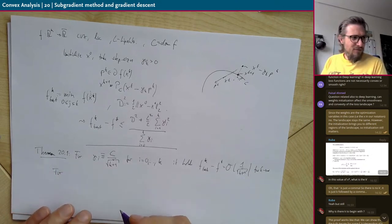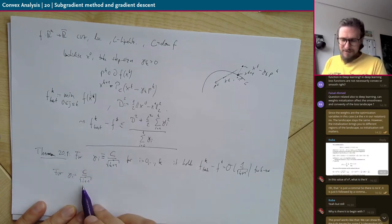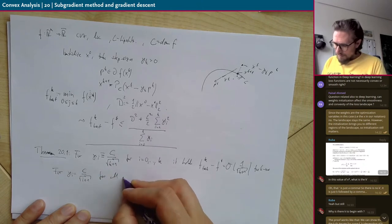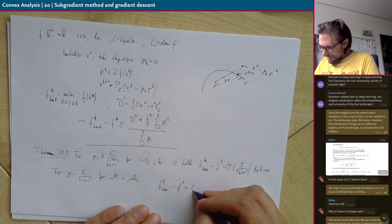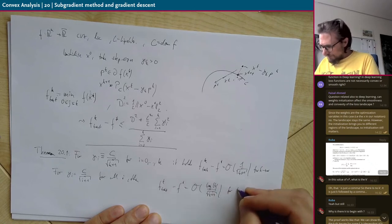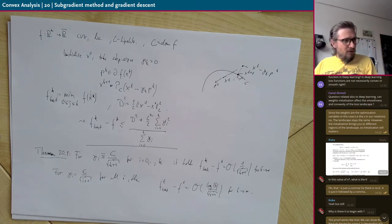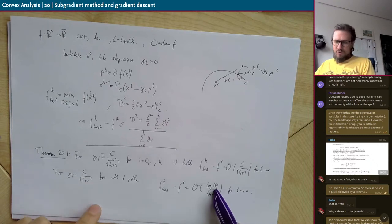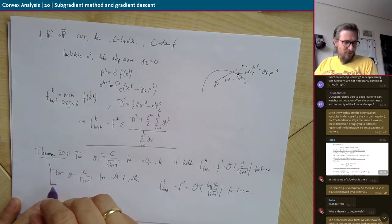The second option is gamma_i = c / sqrt(i+1), where the step size gets smaller and smaller. For all i, you get that f_k^best - f* behaves like O(log(k) / sqrt(k+1)). This is slightly worse than the first case due to the log factor, but has the advantage that you can continue iterating indefinitely. Both options are theoretically sound and practically work.